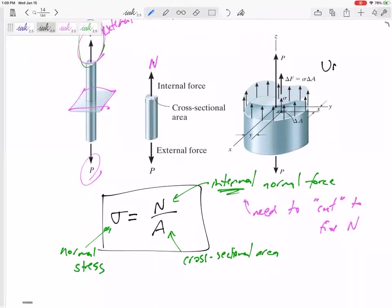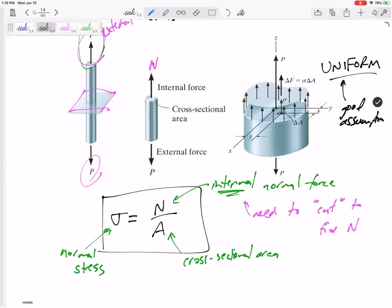And it is uniform. That's a good assumption—it's pretty much uniformly distributed throughout the whole cross section.